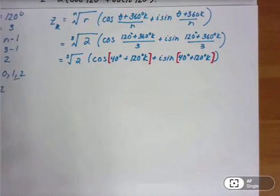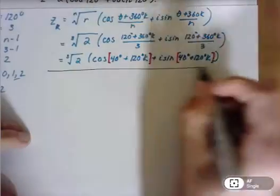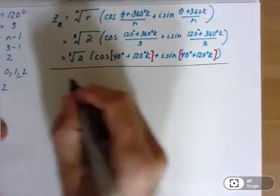That's the z sub k. That's the hardest part. Now, all we need to do is look at when k is 0, 1, and 2.